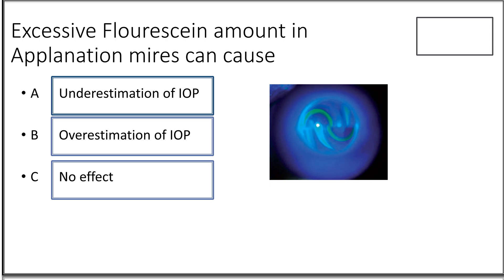Sixteenth question: excessive fluorescein in applanation tonometry can cause — underestimation, overestimation, or no effect? It usually causes overestimation; thicker fluorescein gives a falsely high reading compared to a lesser amount. An adequate amount of fluorescein is necessary for accurate measurement of intraocular pressure using applanation tonometry.